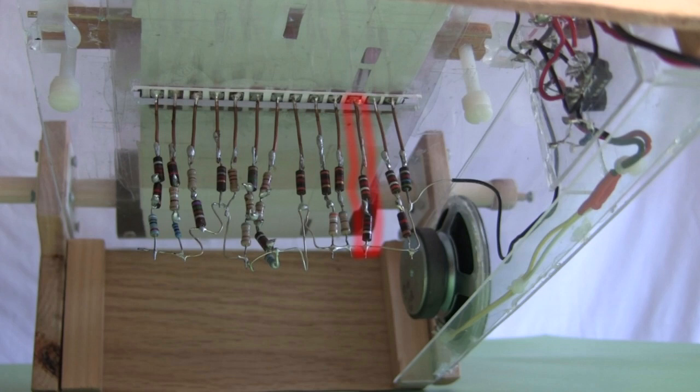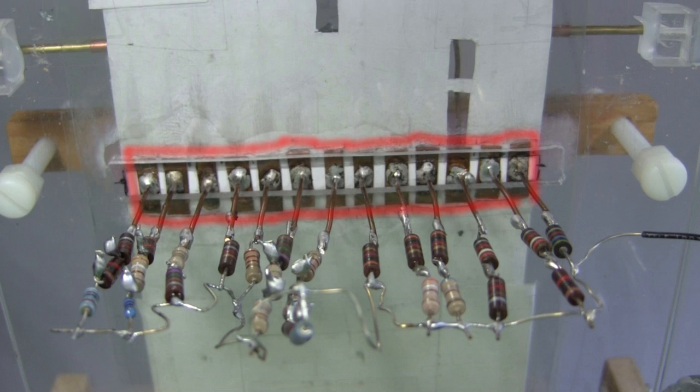To play a note, electricity travels through the line of resistors specially selected for that note. How is a line of resistors selected? They're all connected at the bottom where they return to the rest of the circuit. But at the top, each one is connected to its own copper plate.